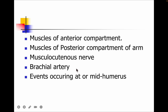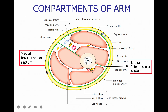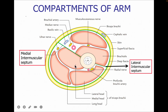We have the brachial artery and events occurring at the mid-humerus. In this cross-sectional view, we can see the skin, superficial fascia, deep fascia, and the humerus bone. We have taken a transverse section near the humerus. There are two septa: the medial intermuscular septum and the lateral intermuscular septum. These divide the arm into anterior and posterior compartments. In the posterior compartment we study the triceps muscle.